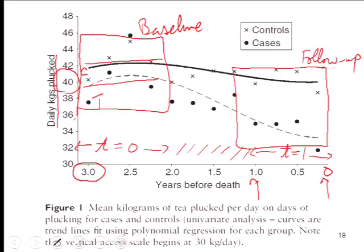It's the average across the whole treatment sample in the circles and the whole control sample in the X's over a three-month window — their average daily kilograms of tea plucked. All the tea plucked for that three-month period by all the treatments per day; they normalize it per day worked. Being sick affects absenteeism too, as we found in the deworming case.